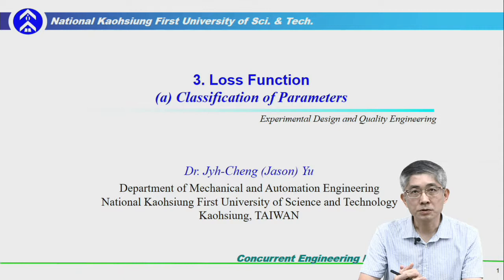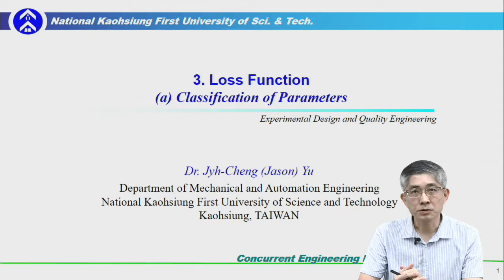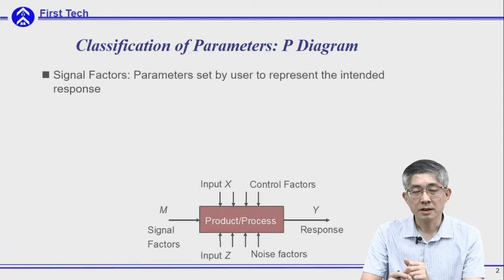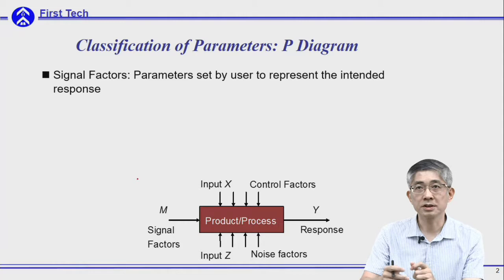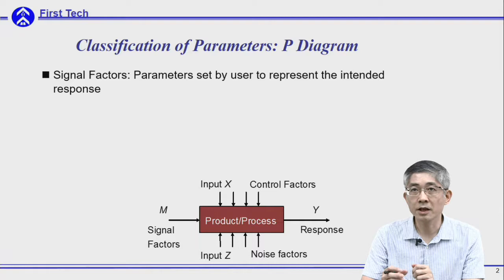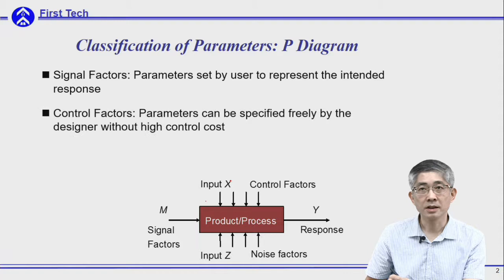Before that, we need to understand what the parameters of a system are. Here we would like to classify the parameters using the P-diagram. Assume this is the system we are talking about. Here M is signal factors — those which can be set by the user to represent their intended response. And the input is the control factors, which are the parameters that can be specified freely by the designers.